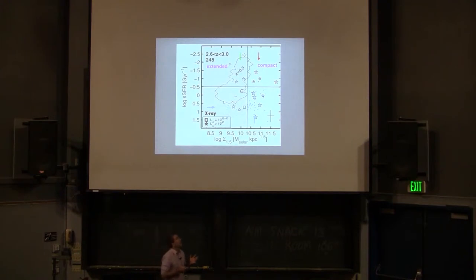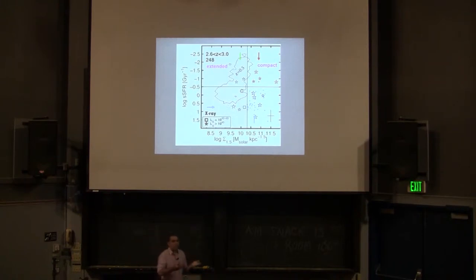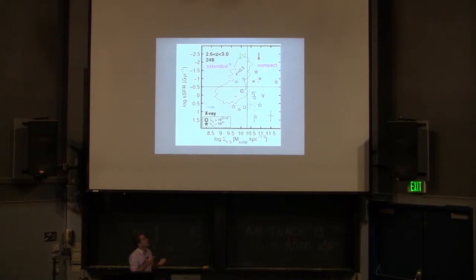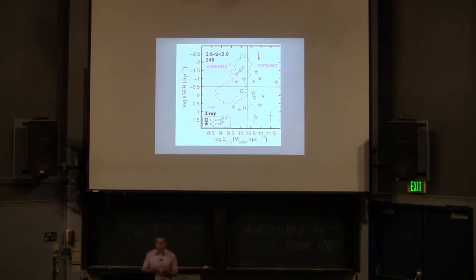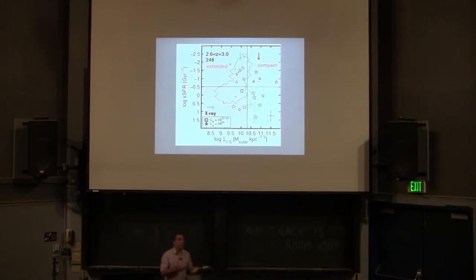Starting at the highest redshift, the most striking result is first that there are very few quiescent galaxies — expected because not many have formed yet. But there are quite a few compact star-forming galaxies lying just below the region of compact quiescent galaxies. Another important result is that many of these galaxies are detected in X-ray. Both quiescent and star-forming galaxies show very high AGN activity — roughly 40 to 50 percent of the sample. This suggests that when galaxies enter this compact mode, the incidence of AGN is significantly higher.